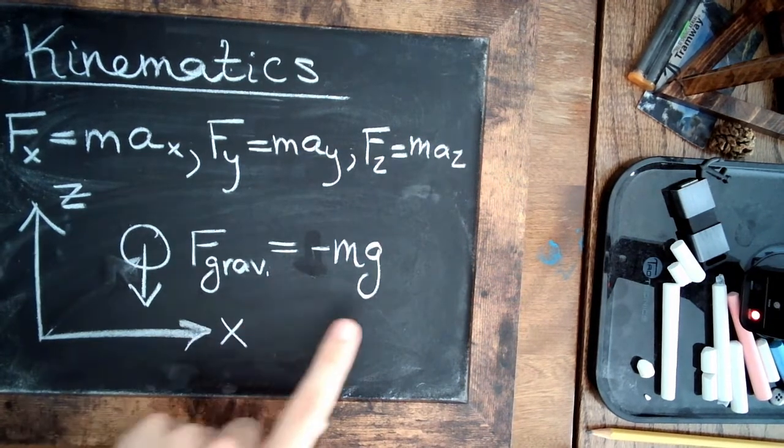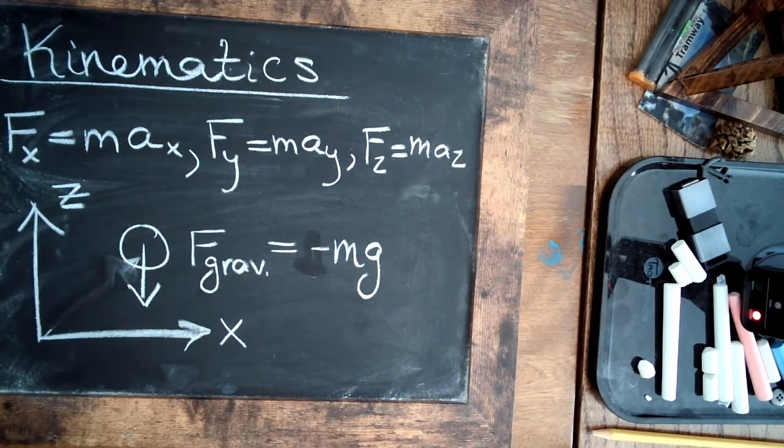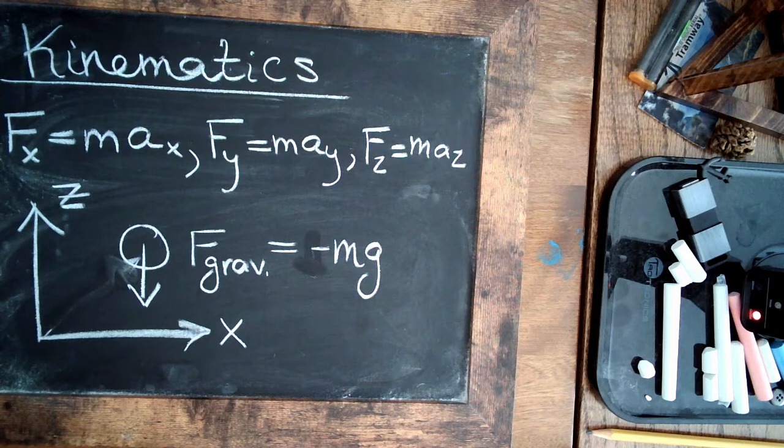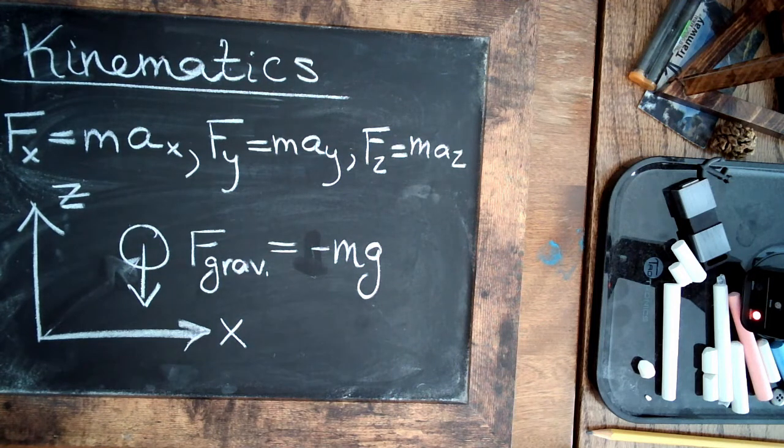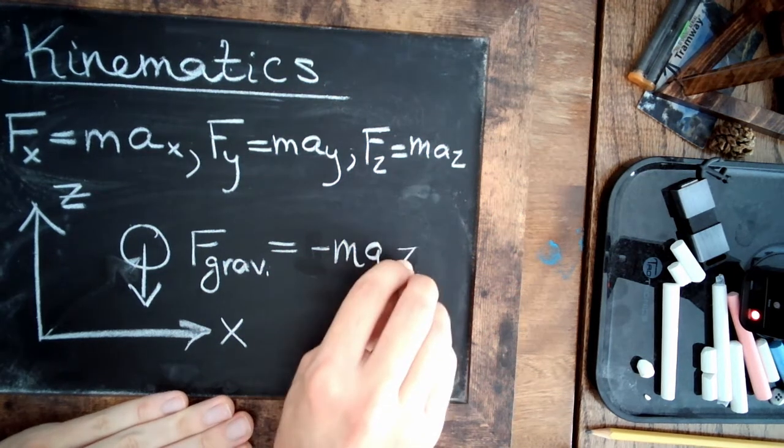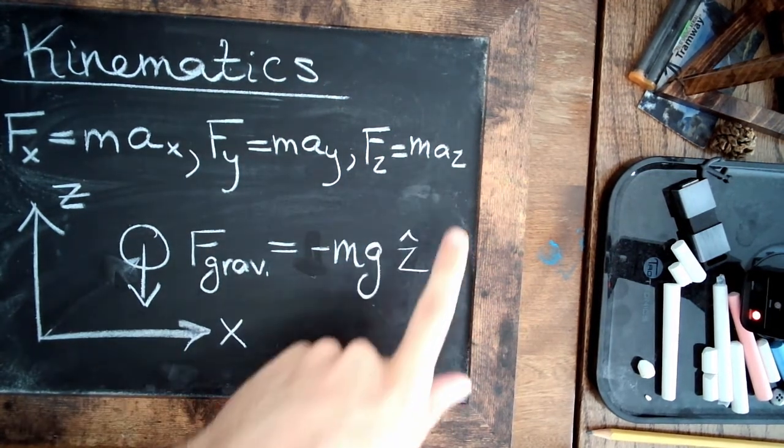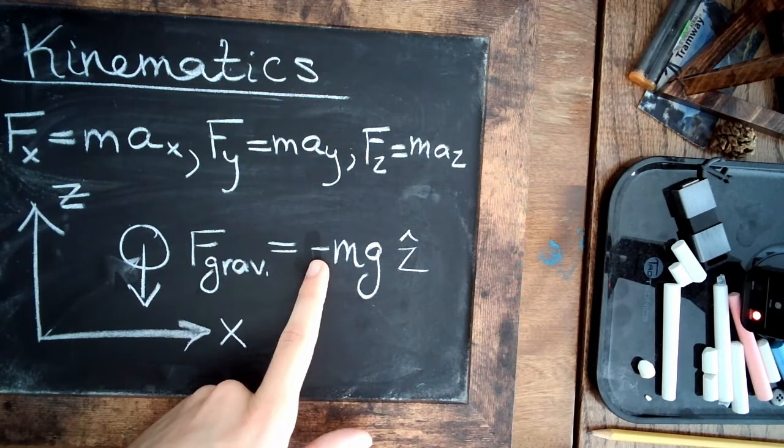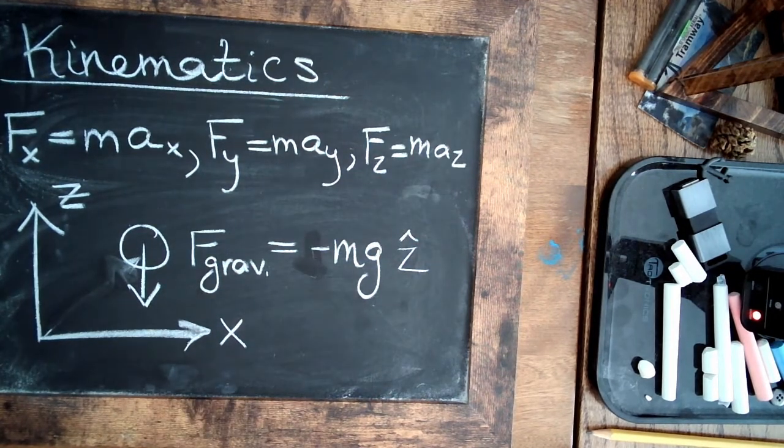So it's the downward force times this constant g, which is specific to the planet or object you're on. So for Earth, we have a value for that g, and we just say it's going to be in the z direction. So we denote that by z with a little hat, negative to indicate that it's pointing downward.